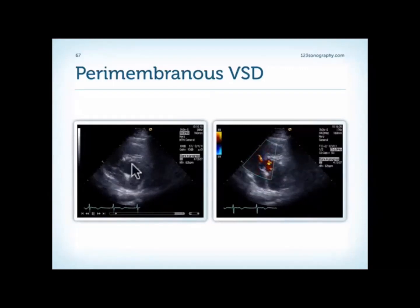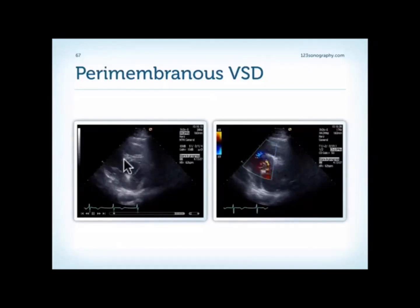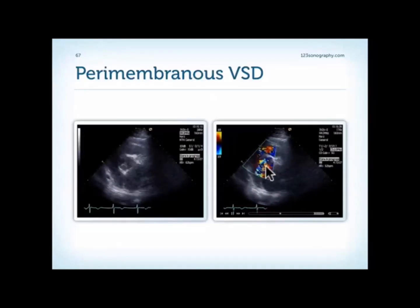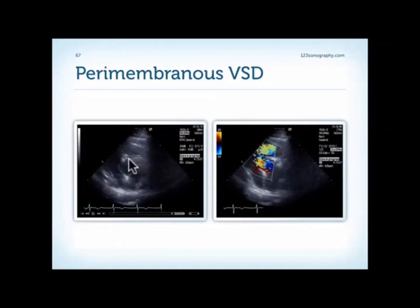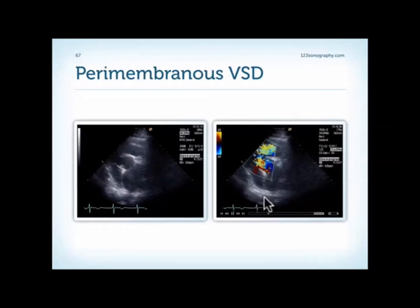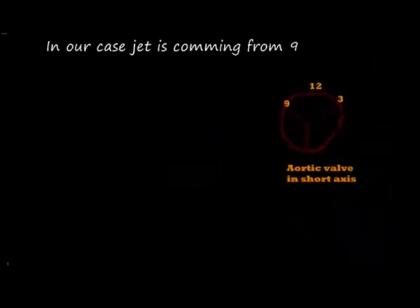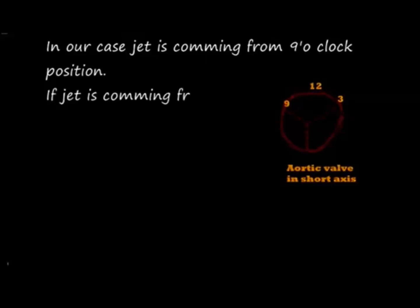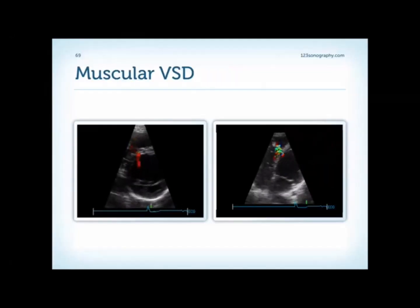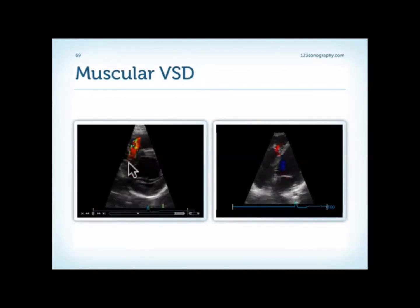Remember the left ventricular outflow tract close to the aortic valve. In the 2D image there is some aneurysmatic transformation, and looking at the color Doppler we can see that there is still a significant shunt. When we only look at the 2D image this could also appear to be a spontaneously closed defect. Here again, a trabecular or muscular VSD is seen in the short axis view of the septal defect.